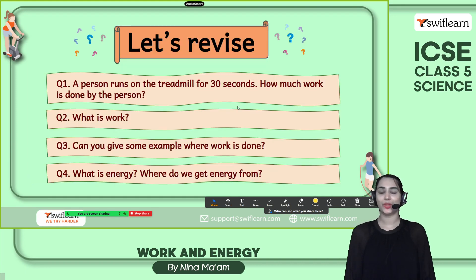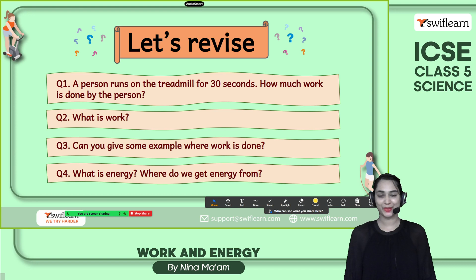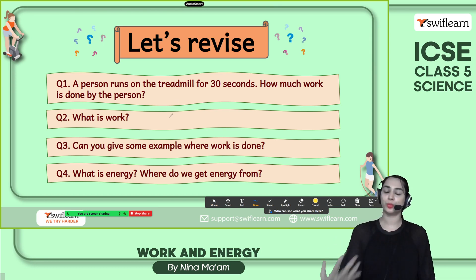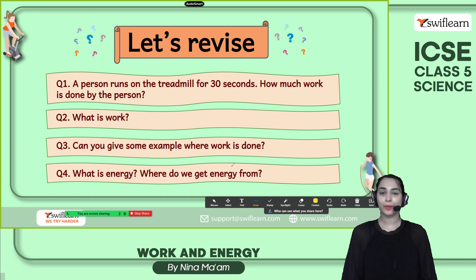Time to revise. First question: a person runs on a treadmill for 30 seconds — how much work is done? Comment below if you can get the answer. What is work? Work means applying a force to an object such that there is a displacement — that is work. Work can be positive, negative, or zero. Examples of work done include swimming, playing football, and climbing the stairs.